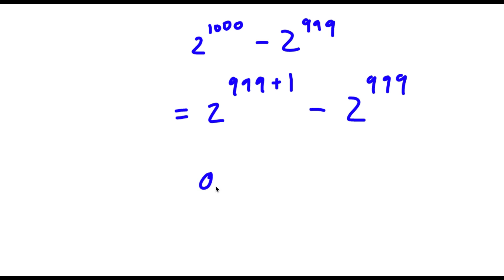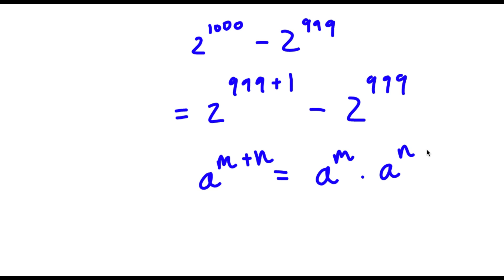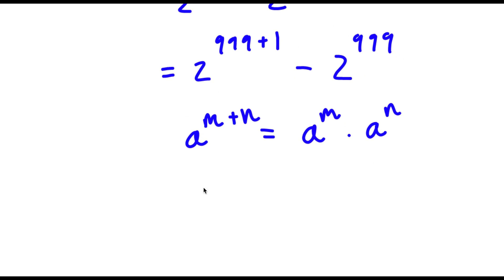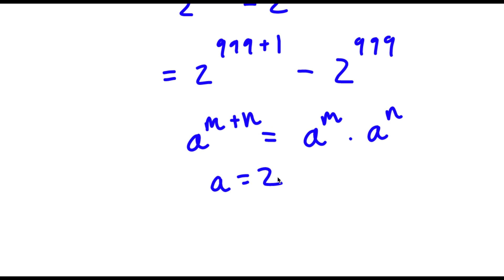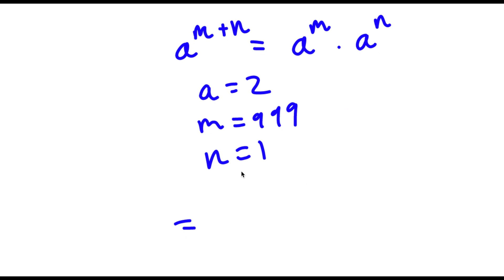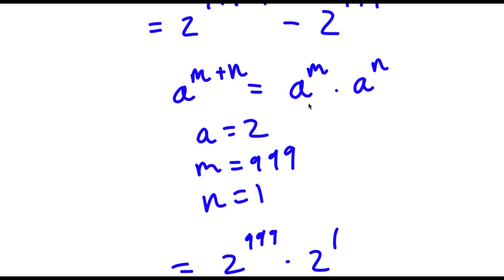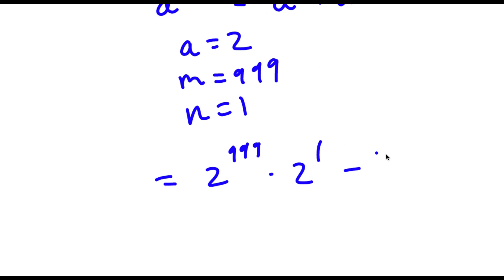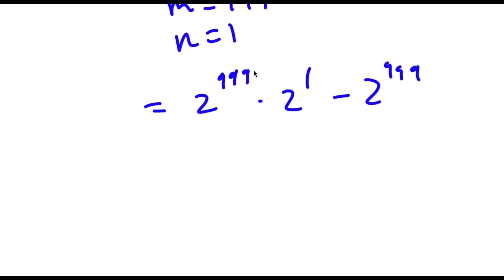Now, if I have something in the form a to the power of m plus n, this is the same thing as a to the power of m times a to the power of n. So 2 to the power of 999 plus 1 — we can think of a as 2, m as 999, and n as 1. So now this is going to equal 2 to the power of 999 times 2 to the power of 1, and now I have this minus 2 to the power of 999. Now to simplify this, I'm going to factor out 2 to the power of 999, because both of these terms have 2 to the power of 999 in them.